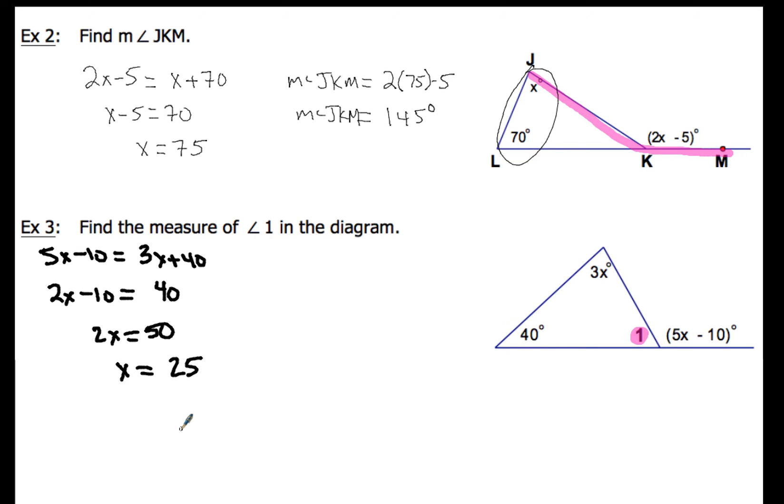Now, there's two different ways that you can come up with a measure of angle 1. One of them is to plug in x for 3x. So if I do that, then this angle right here, 3x, that's going to have a value of 3 times 25 is 75. So that angle is going to be 75.